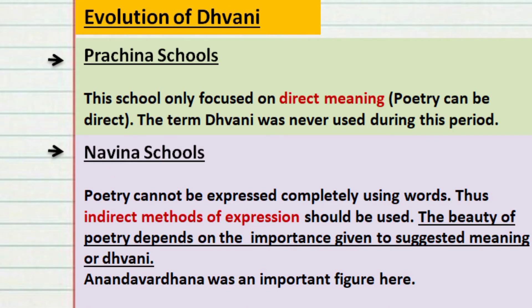When Anandavardhana came up with the idea that Dhvani is important to make good poetry — a good poem will always have this element of Dhvani in it — we came to know about this theory. If you look at the evolution of Dhvani, you can look at schools as the Prachina schools and Navena schools. Prachina schools are the old schools; they only focused on direct meanings in the poem and thought of the direct meaning as the ultimate meaning. But with time, the new or Navena schools understood that poetry cannot be expressed completely using words, and thus indirect methods of expression were asked to be used.